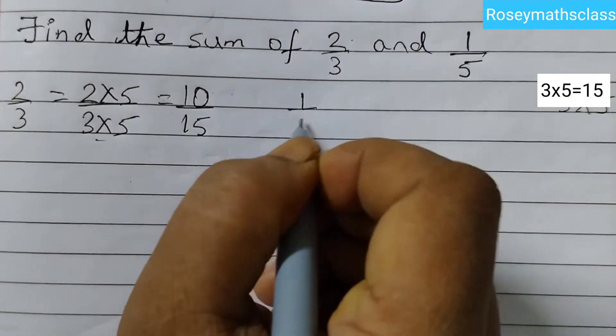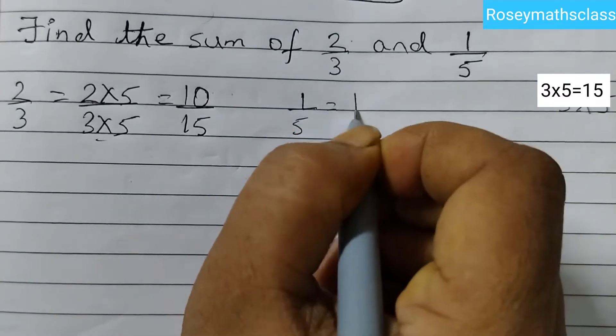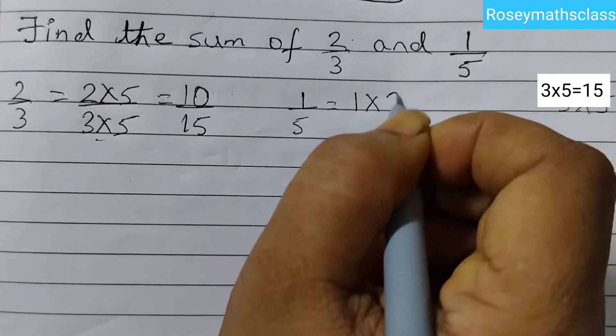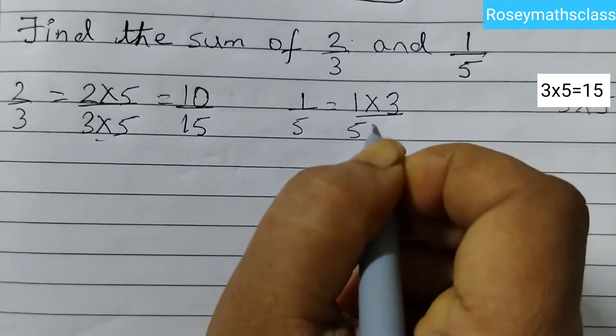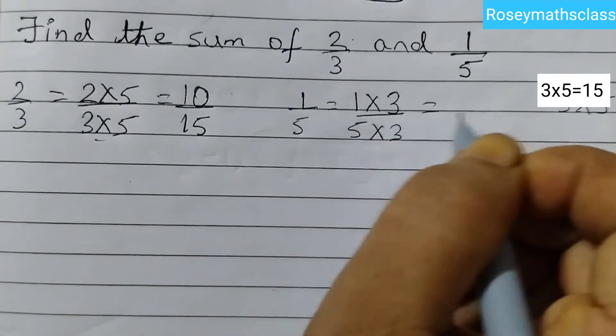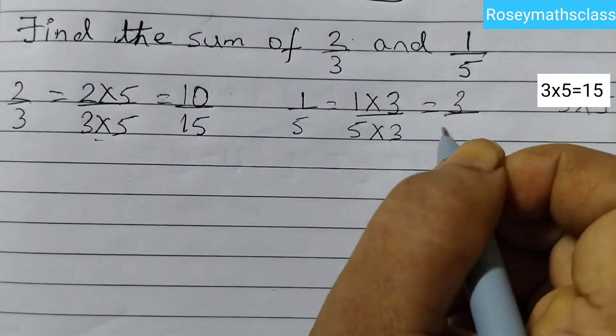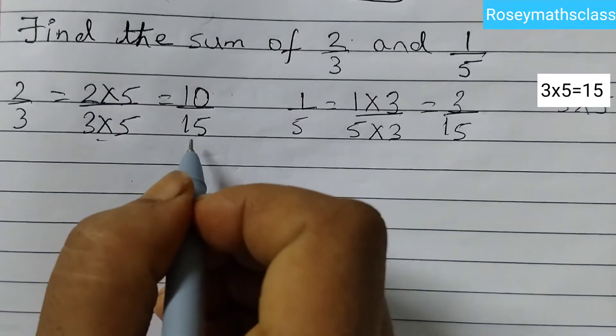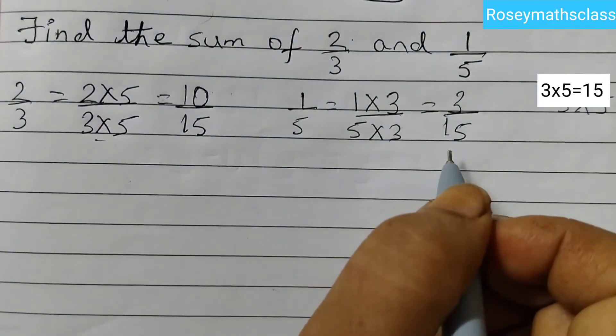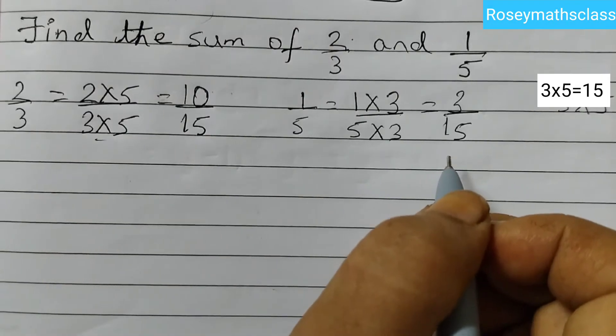For 1 by 5 that would be equal to 1 into 3 and 5 into 3. 1 into 3 is 3 and 5 into 3 is 15. Now see here 15, we got the same denominator. So now we are going to add.